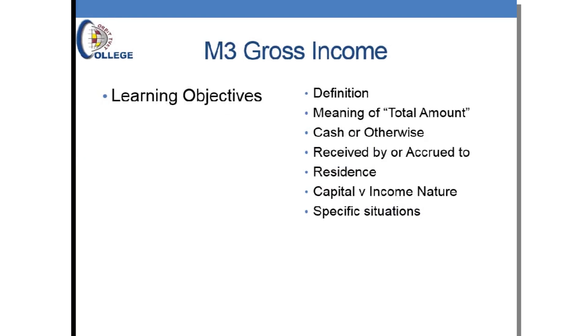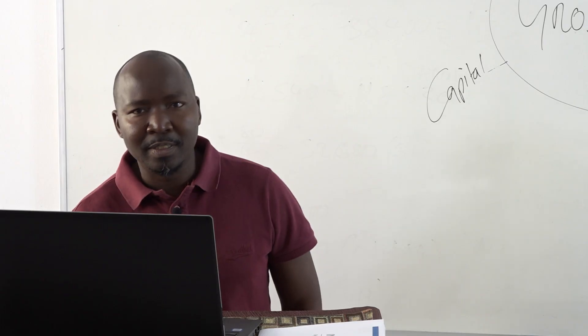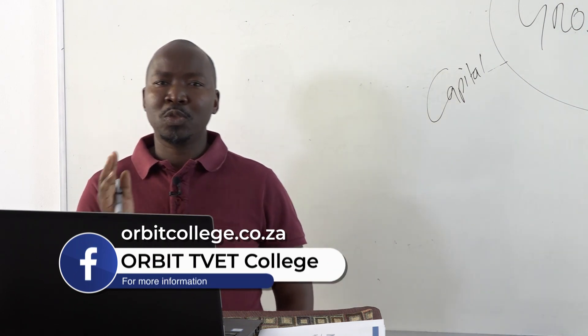Module 3, definition of gross income, is the most important module in the whole textbook. Because if you cannot define gross income, there are a lot of topics that you will fail to answer — from doing the tax liability of a natural person, to the tax liability of a farmer, to fringe benefits, to the tax liability of a close corporation or a company. You need to be able to define gross income.